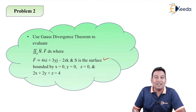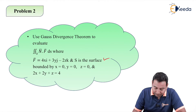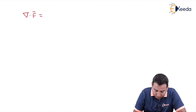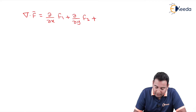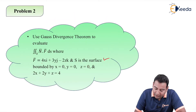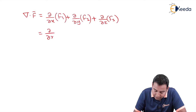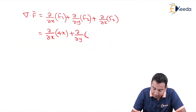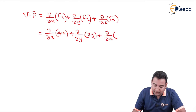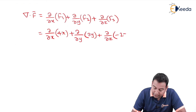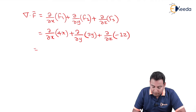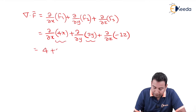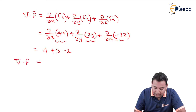First, let's find the divergence. Del dot F̄ equals ∂/∂x of F1 + ∂/∂y of F2 + ∂/∂z of F3. F1 (the i-component) is 4x, F2 (the j-component) is 3y, and F3 (the k-component) is −2z. Differentiating: 4 + 3 + (−2) = 5. So del dot F̄ equals 5.